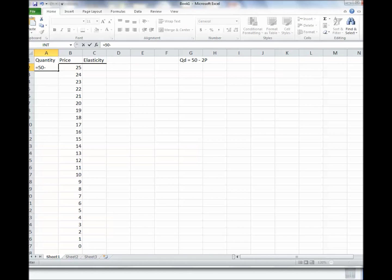So the quantity is given by that expression, 50, minus 2, times the price value. So when the price is 25, the quantity is 0. And here are all the other quantities. Okay.